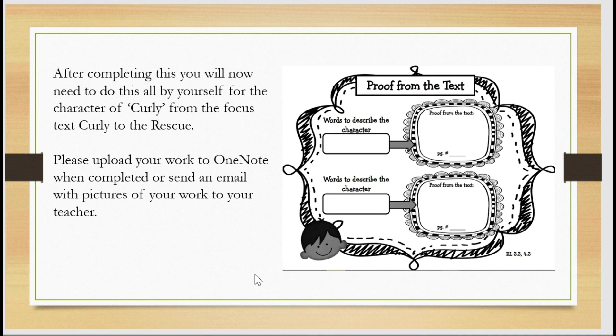That completes our worksheet based on Pam and Lily for today. Just like yesterday you're now going to go and do the same activity but for the character of Curly in the text Curly to the Rescue. Just like yesterday as well please make sure you upload any work onto the OneNote or take a picture or scan in your work and send it in an email to your teacher so we can mark and give you some feedback.